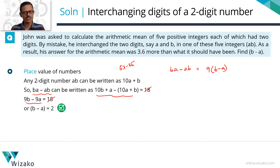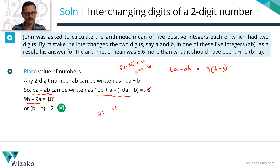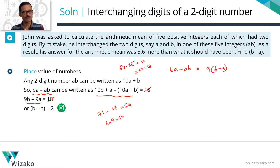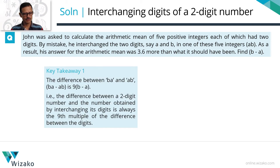Let's verify: 53 minus 35. Difference between digits is 2, times 9 equals 18 — correct. Another example: 71 minus 17. Normally computed that's 54. Check: 7 minus 1 is 6, times 9 equals 54. Confirmed. The difference between a two-digit number and the number obtained by interchanging its digits is always the 9th multiple of the difference between the two digits.